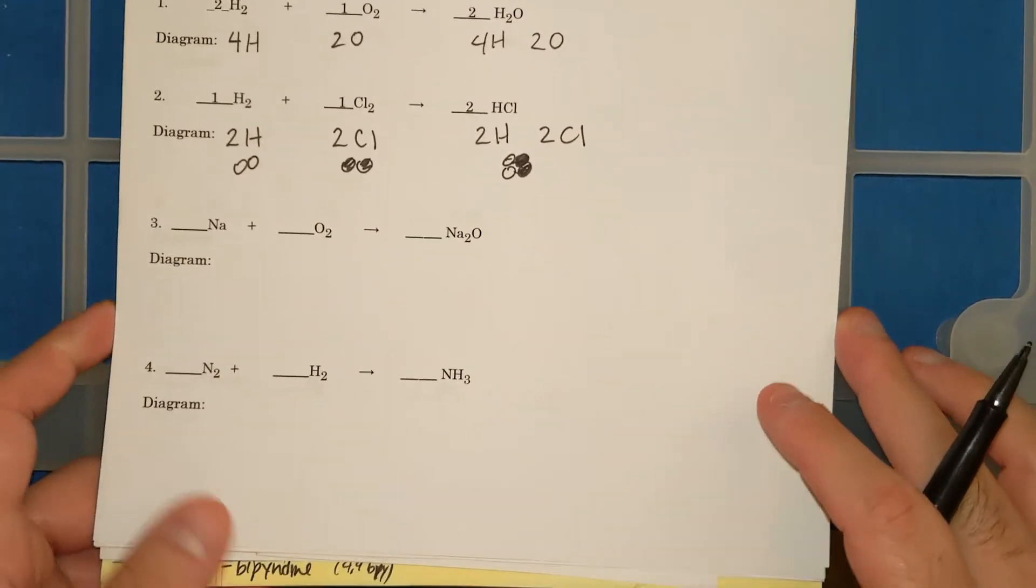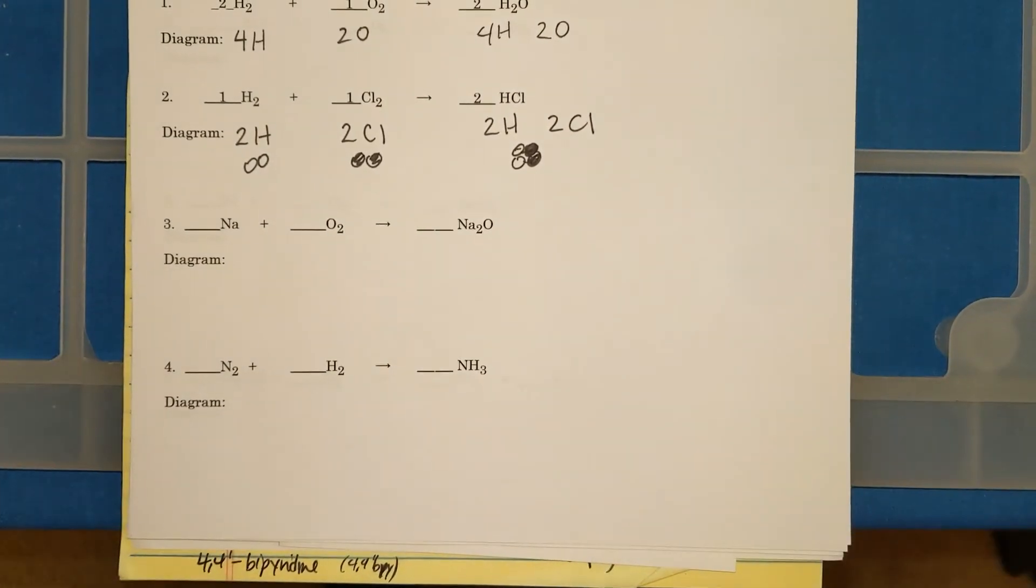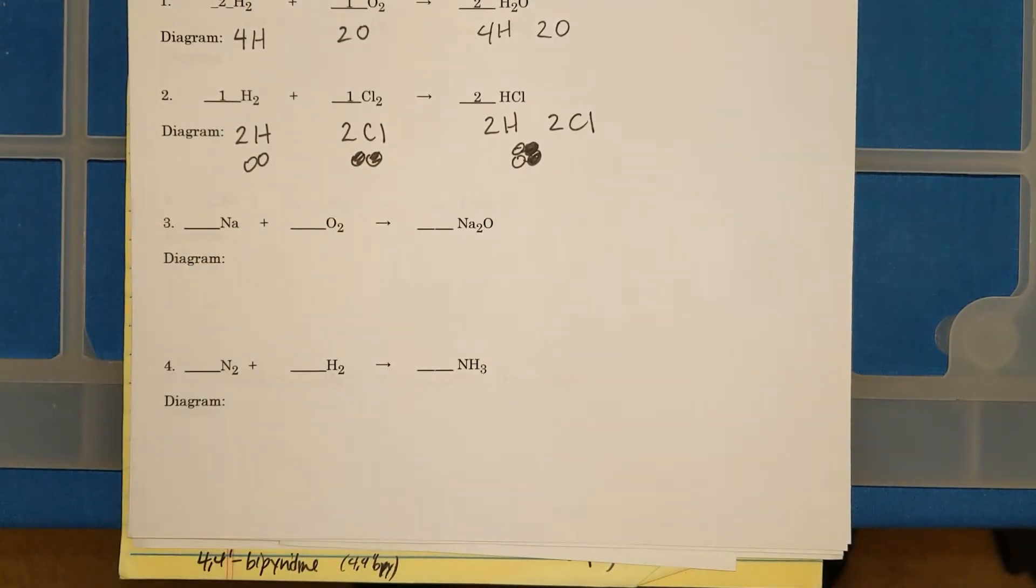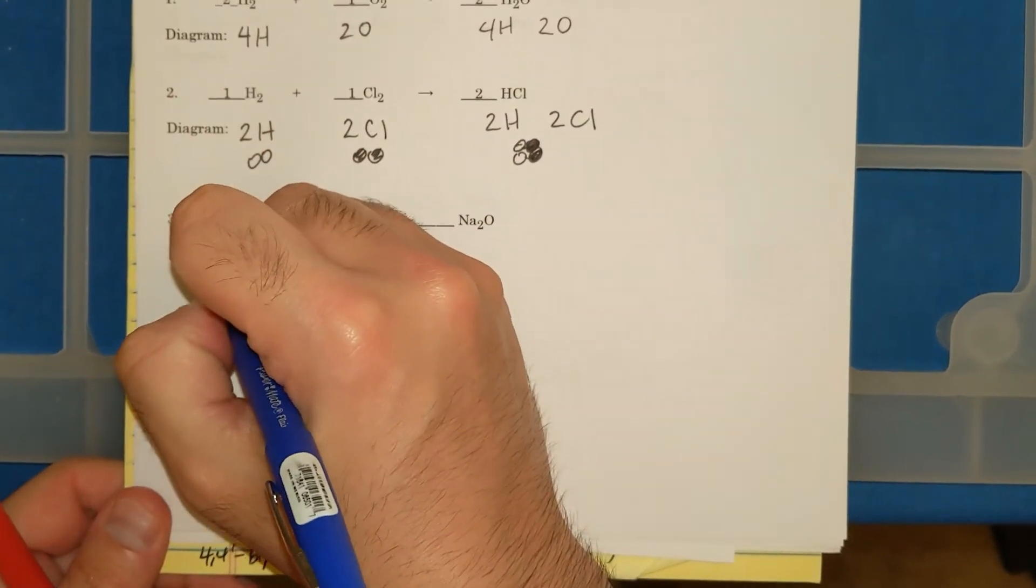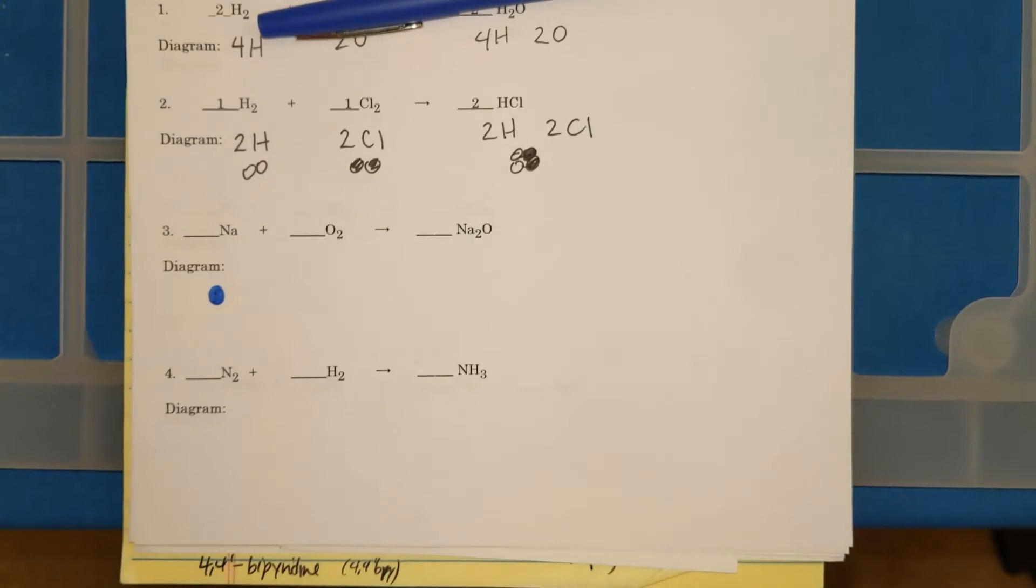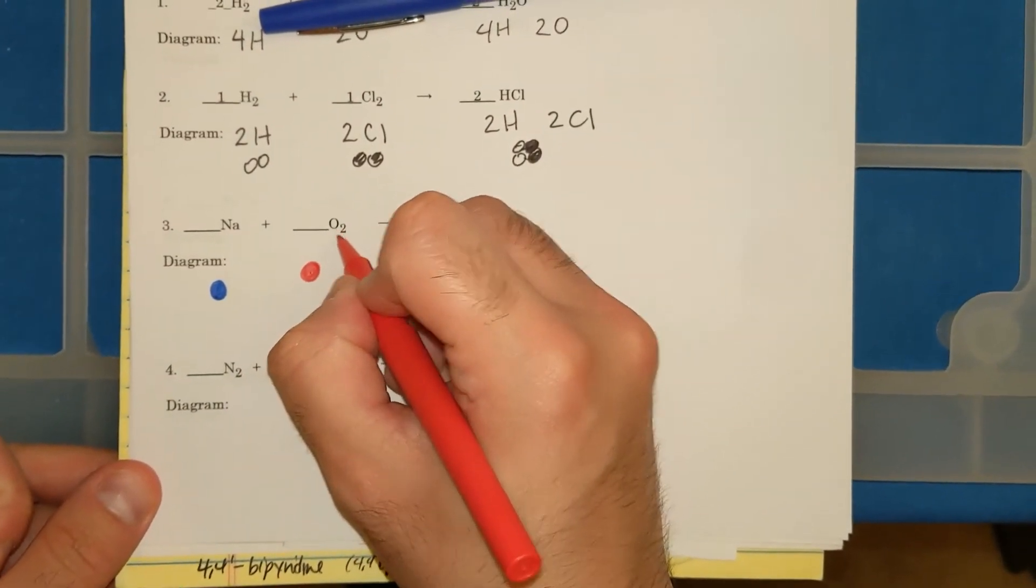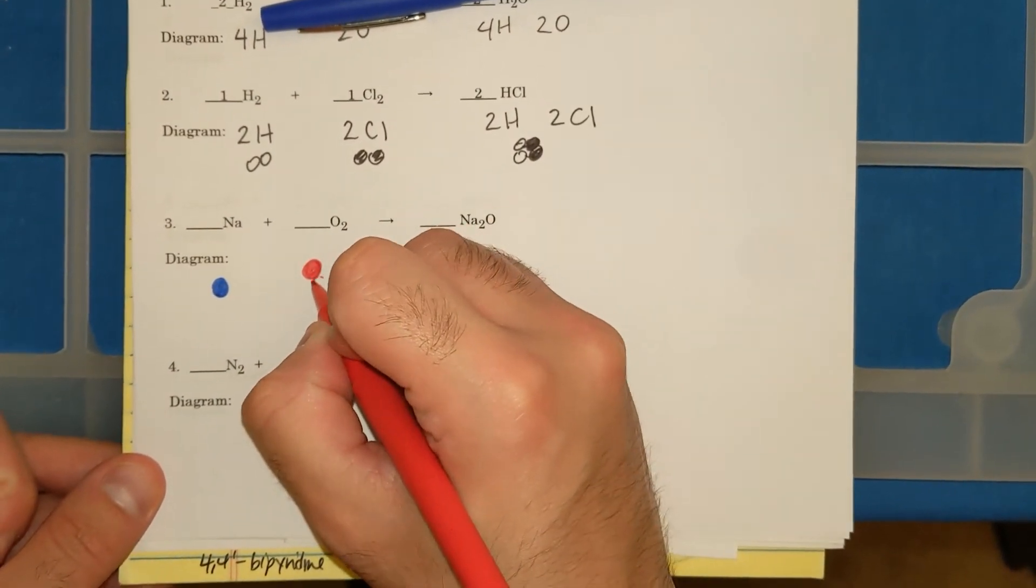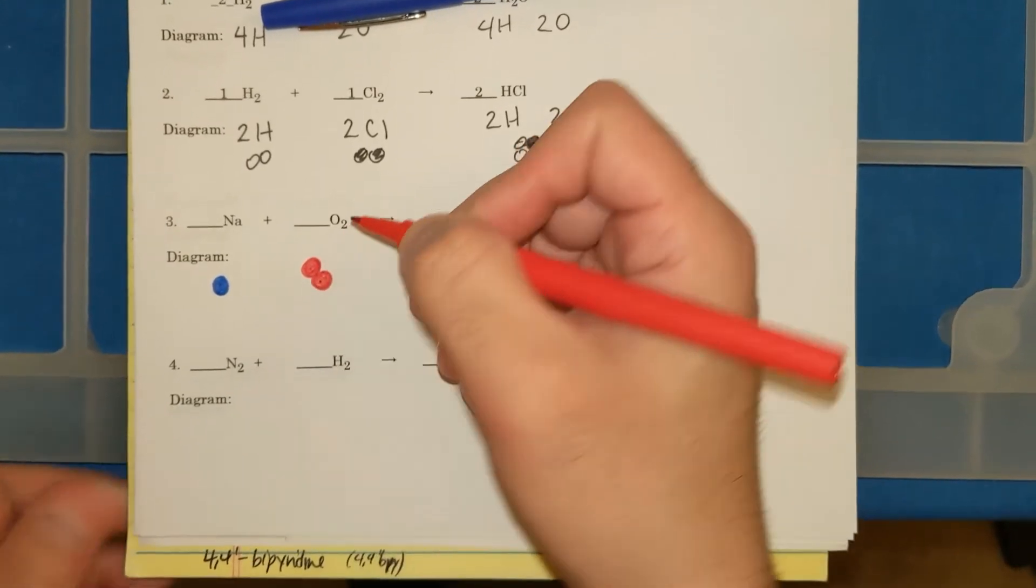Now let's do more examples of balancing. So let's look at the first one that's not done. I have Na and O2 and I get Na2O. Let's make Na a blue circle and let's make O2 red circles. And it's O2, that little 2 means I have 2 O's that are connected. It's a molecule.